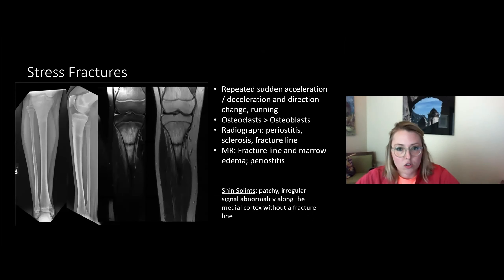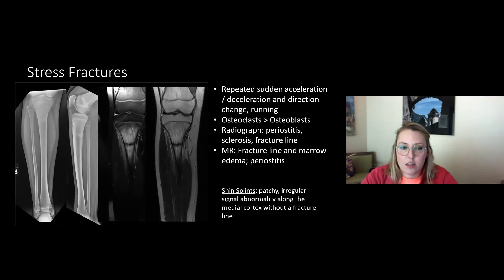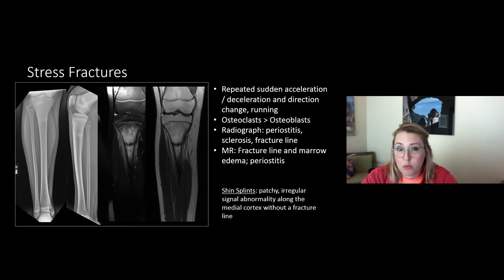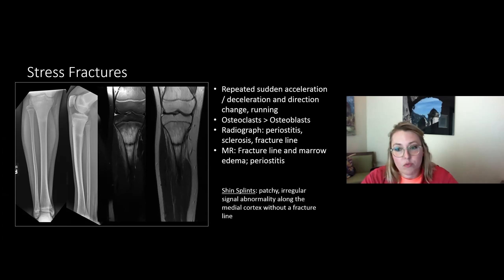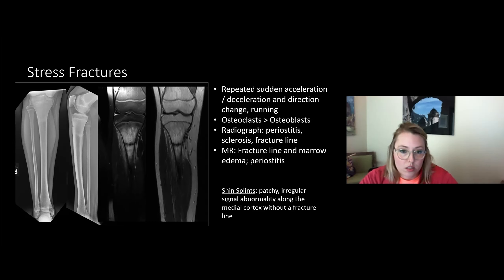Stress fractures are increasing in incidence in the adolescent population. With a runner with shin pain it's the first thing everyone thinks of, but stress fractures can occur in any athlete with vigorous or single-sport training. Abnormal or repeated stress on normal bone triggers remodeling — a resorption process followed by reformation. When you don't give the body a break, the resorption process outpaces bone formation and you get a stress fracture.